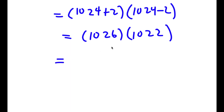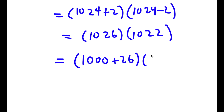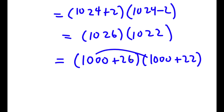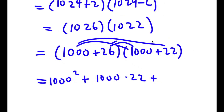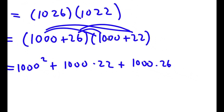An easier way to multiply these two is to break them down. So 1026 we can rewrite as 1000 plus 26, and 1022 we can rewrite as 1000 plus 22. All we have to do to get our answer is distribute. Starting with 1000 distributed to 1022: I have 1000 squared plus 1000 times 22, plus 26 times 1000, and finally plus 26 times 22.